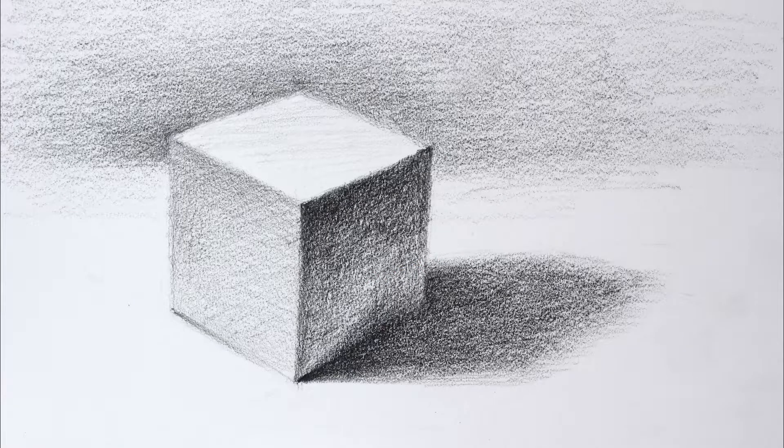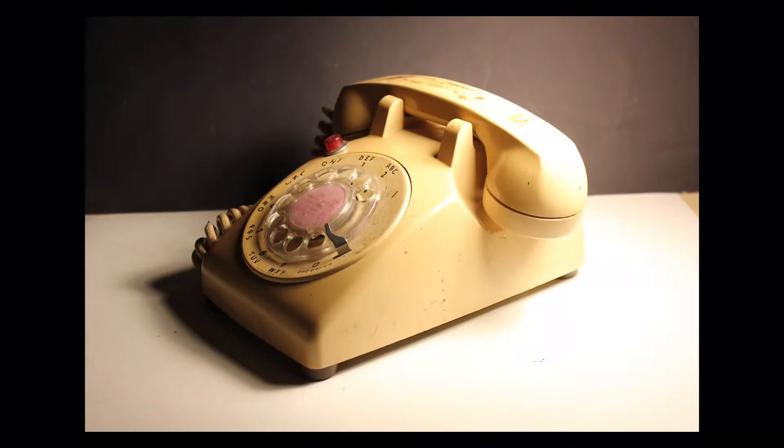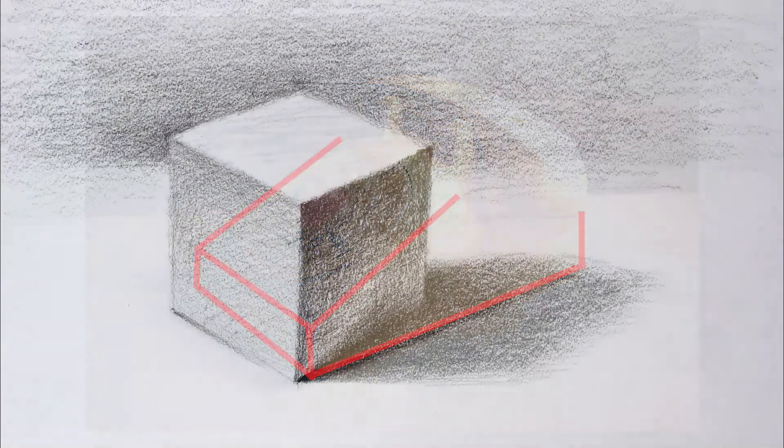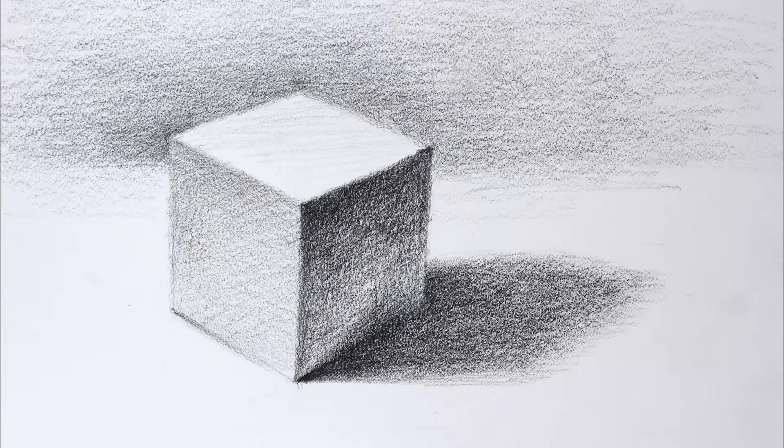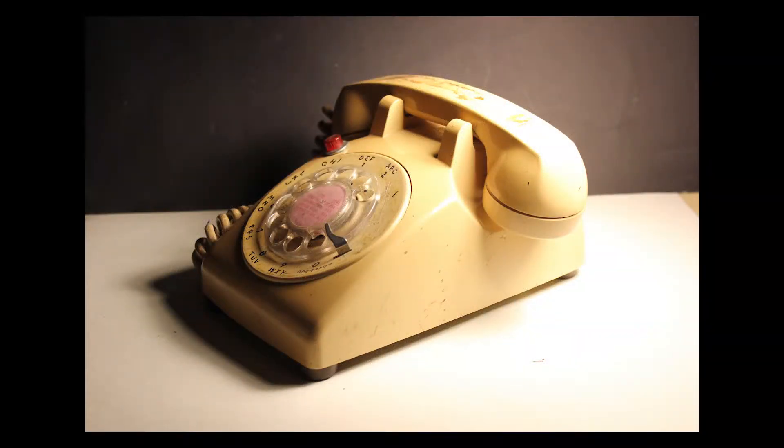Now the reason we are looking at a simple object like a cube is because understanding these basic values will help us to draw more complex flat sided forms. Here take a look at this old telephone. It has some rounded forms on it, but it also has many corners and flat sides of planar values. Understanding the basic value structure of a cube can help us shade more complex things like this object here.